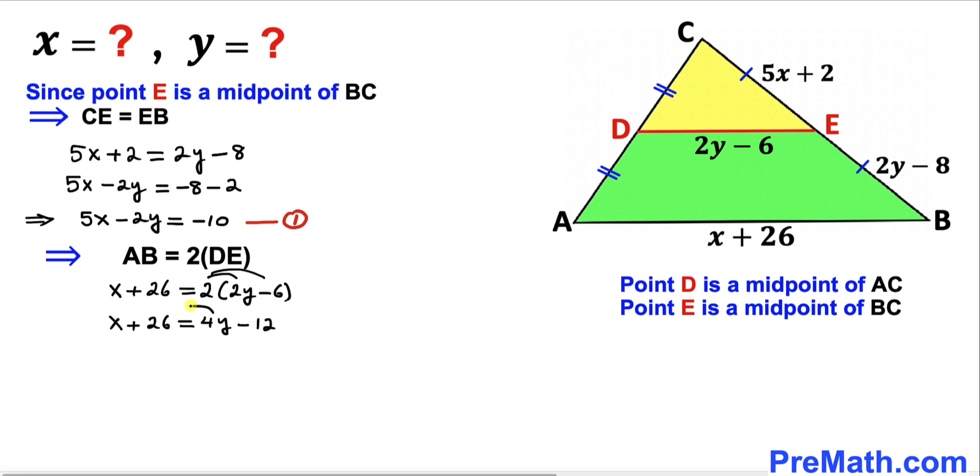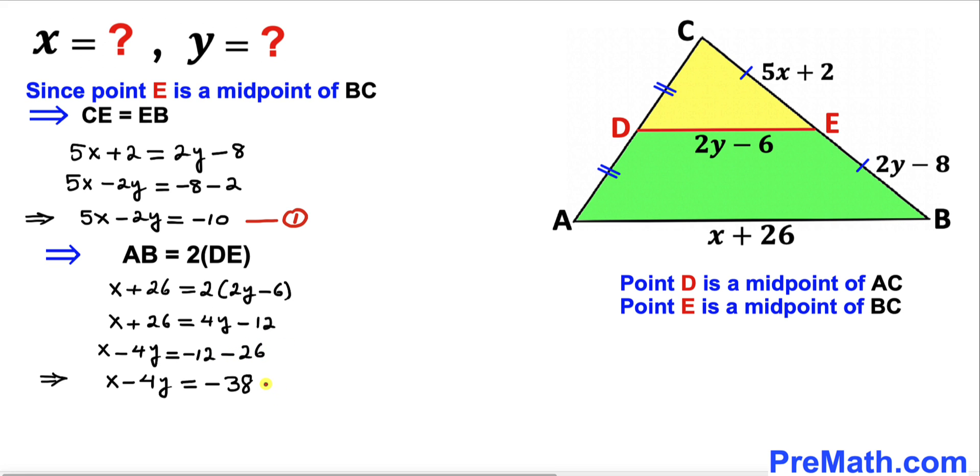Let me move this 4y to the left-hand side and move this 26 to the right-hand side. Therefore we get x minus 4y equals negative 12 minus 26, which is negative 38. Let's call this our equation number 2.